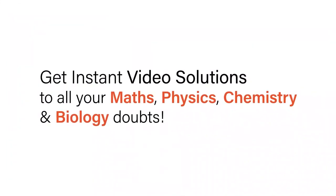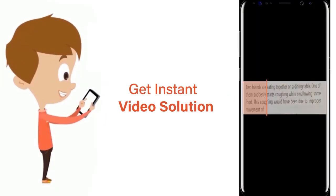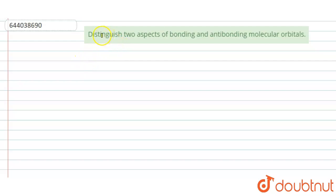With DoubtNet, get instant video solutions to all your maths, physics, chemistry and biology doubts. Just click the image of the question, crop the question and get instant video solution. Download DoubtNet app today. Hello, the question is distinguish two aspects of bonding and anti-bonding molecular orbitals.